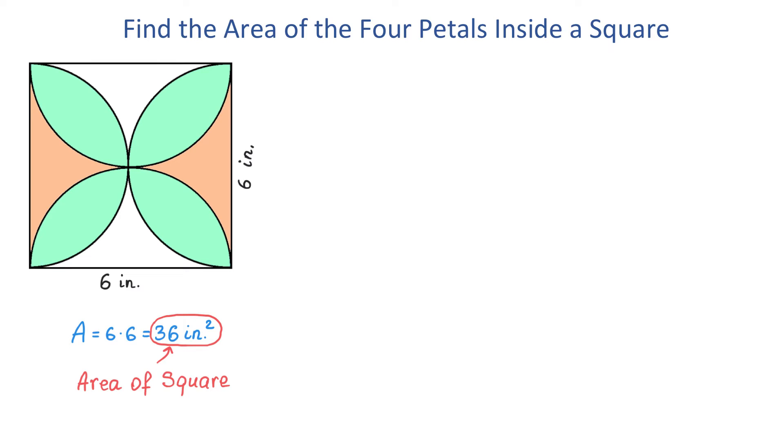To find the area of this circle, we use the formula A equals pi r squared. In this formula, we replace r with 3. Then, the area of the circle is 9 pi.